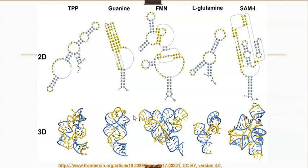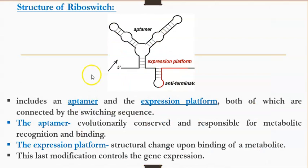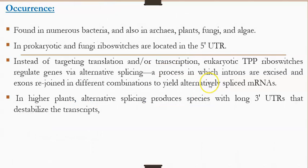Coming to the structural features, here we can see the riboswitch classes of TPP, guanine, and FMN in two-dimensional and three-dimensional representations. These are small in size, present either at the 5' terminus or 3' untranslated regions of the mRNA, or sometimes within the introns of the mRNA. There are two domains: the first domain is called the aptamer domain, to which the ligand binds, and ligand binding to the aptamer brings conformational changes in the other domain called the expression platform. Riboswitches are found mostly in bacteria and also in plants, fungi, and algae.